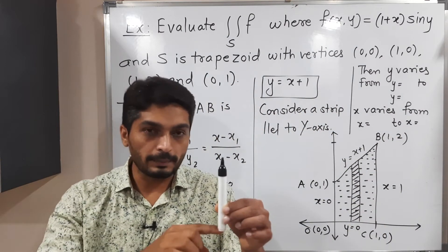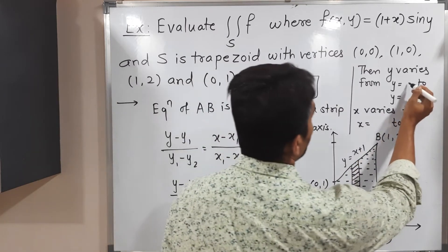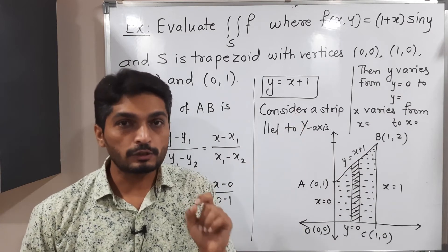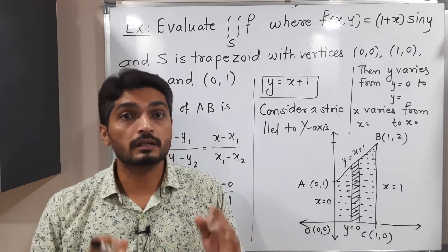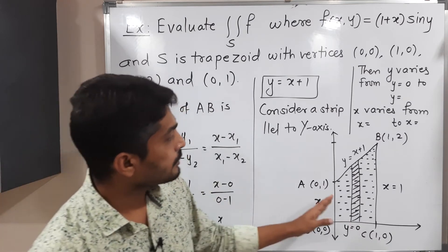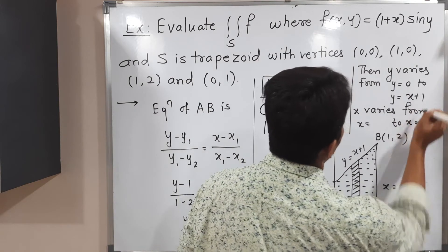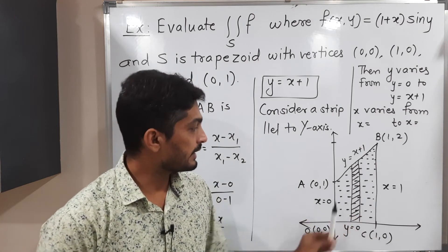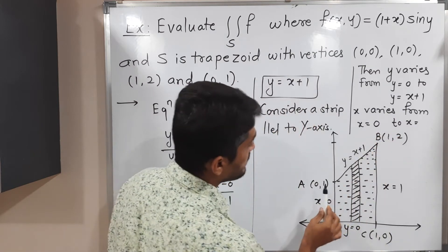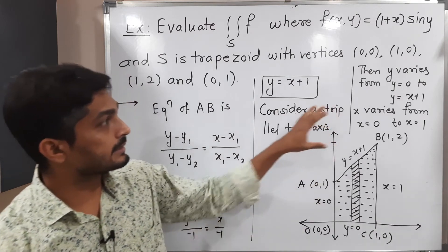The strip is bounded below by the x-axis, so y = 0 is the lower limit. The strip is bounded above by the line y = x + 1, so x + 1 is the upper limit. Moving the strip from left to right: on the left, x = 0, and on the right, the strip goes up to the line x = 1. So the limits of x are 0 to 1, and y goes from 0 to x + 1.